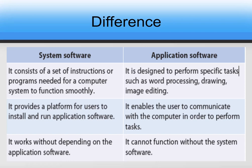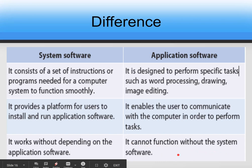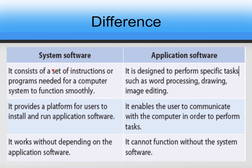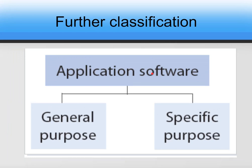Application software is what users can communicate with directly, whereas users do not communicate directly with system software — it is the developer people who have worked on developing Windows who communicate with system software. System software works without depending on application software, but application software cannot function without system software, because without system software the computer will not work, and so the application softwares will also not work.